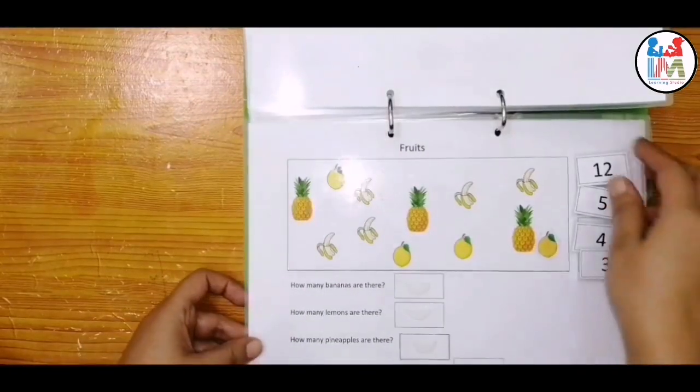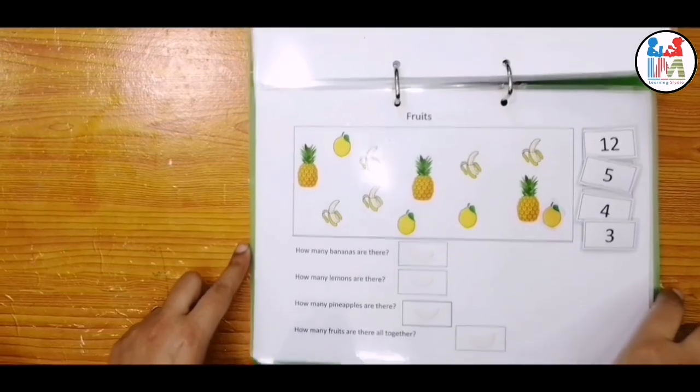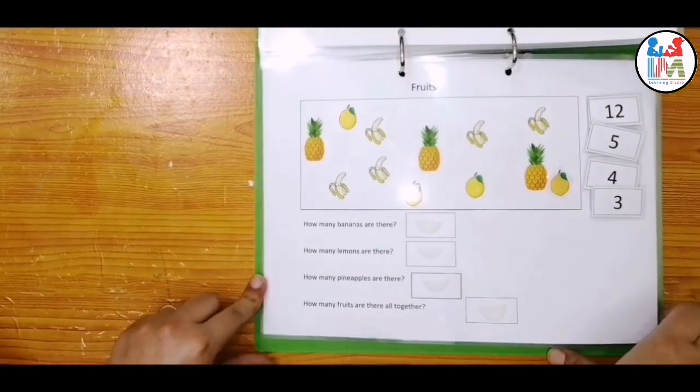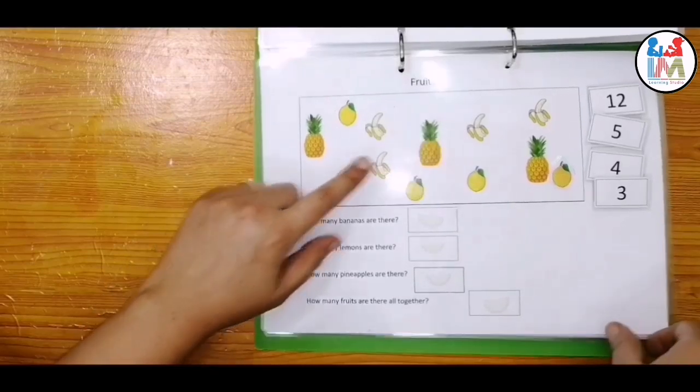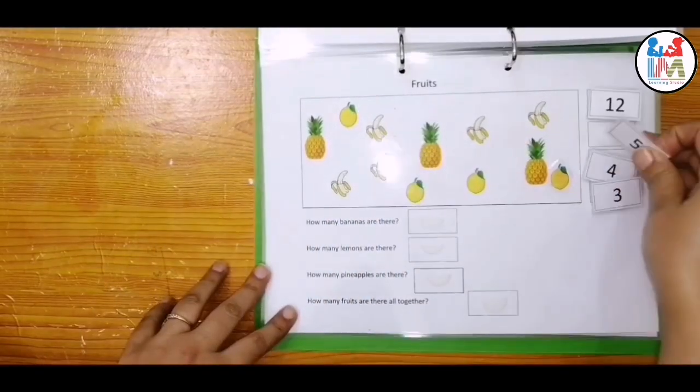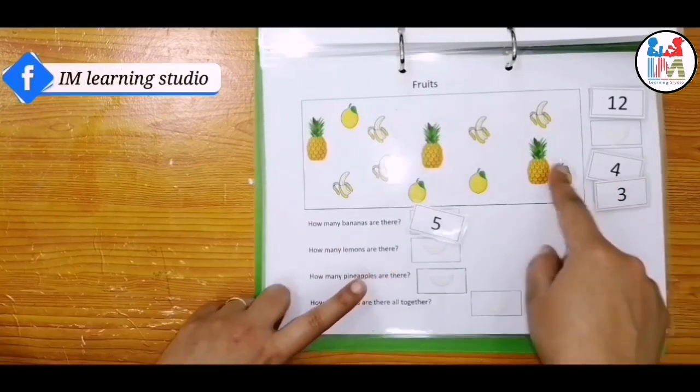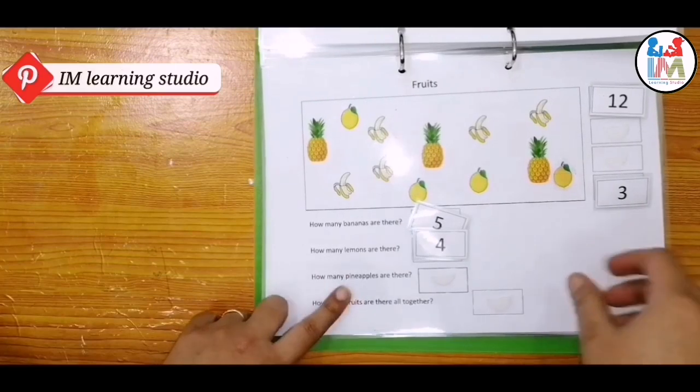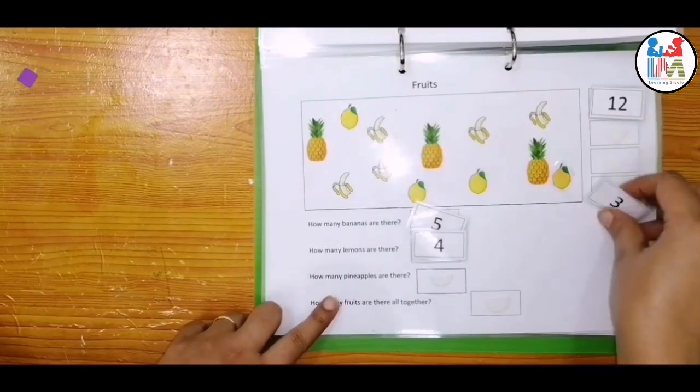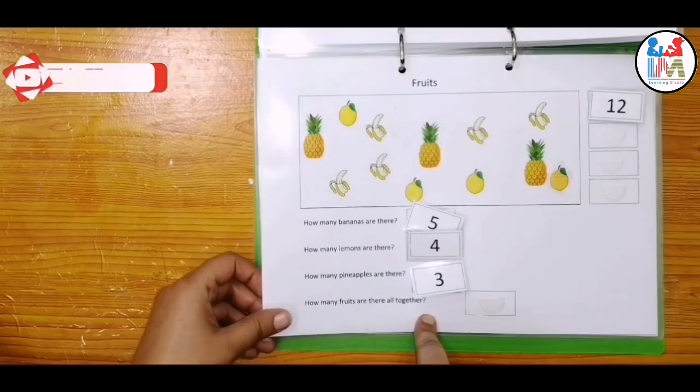Next, here you can see on your screen this is fruit and here kid has to count same kind of fruit. How many bananas are there? One, two, three, four, five. How many lemons are there? One, two, three. And the next one, how many pineapples are there? One, two, three. And how many fruits are there all together?